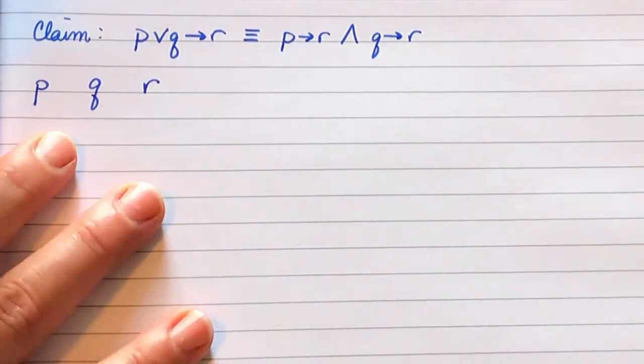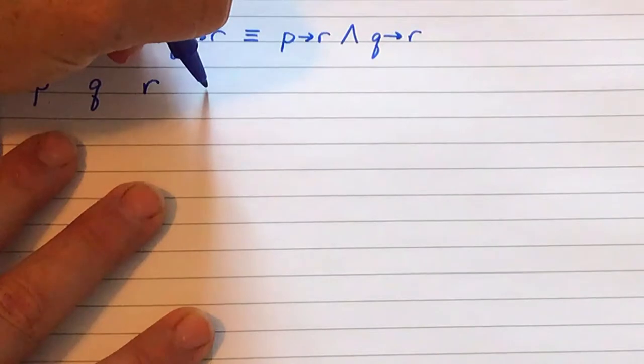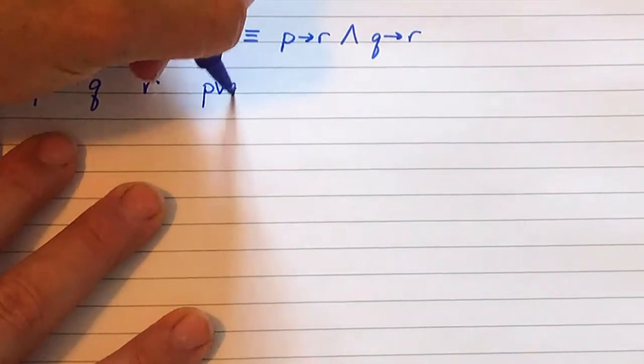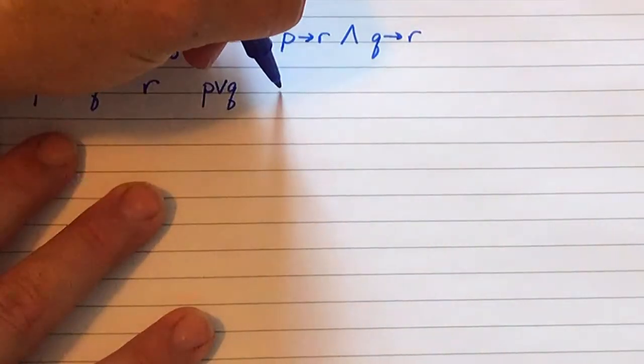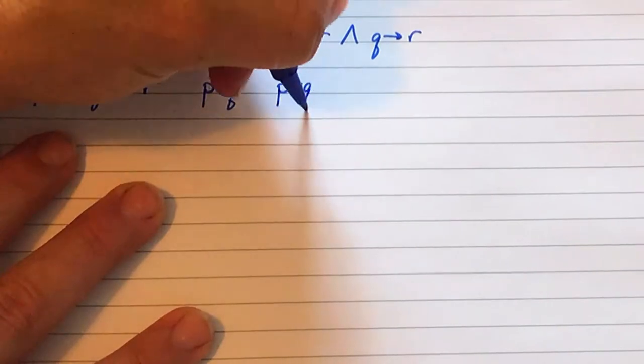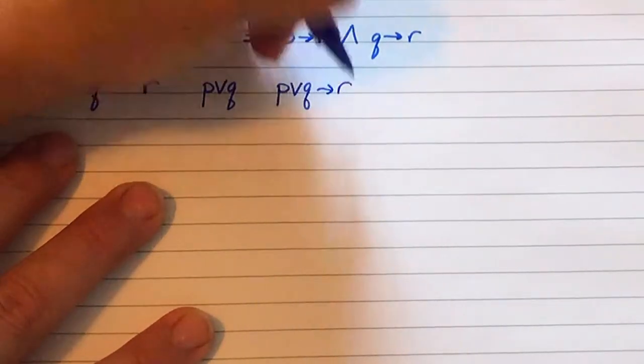For the left hand side, I am going to make two additional columns. I am going to do P or Q and I am going to make a column for P or Q implies R.